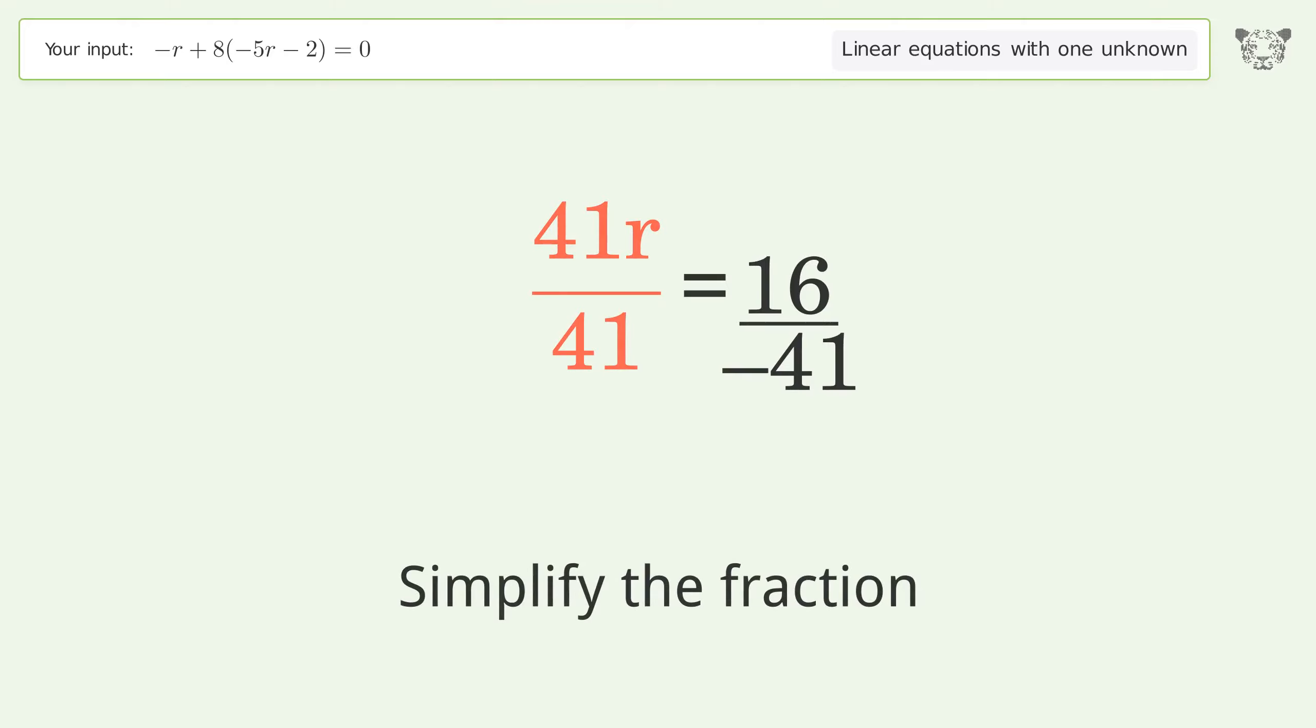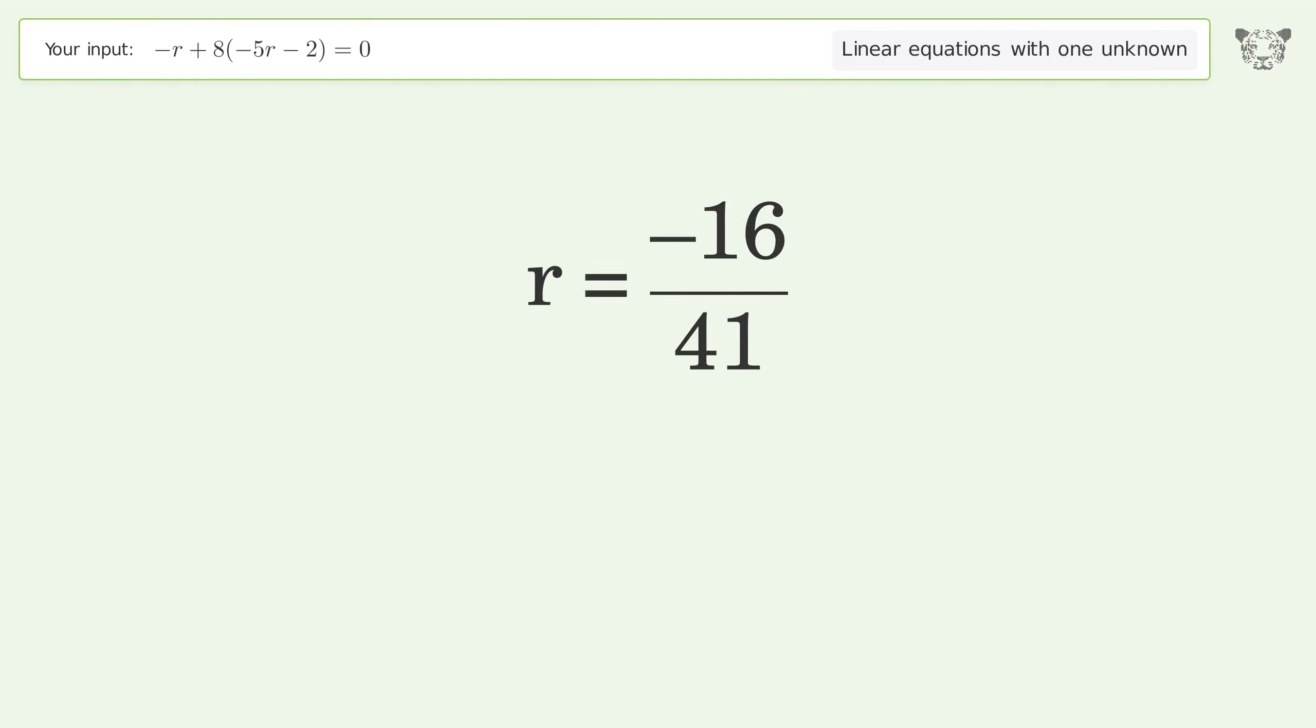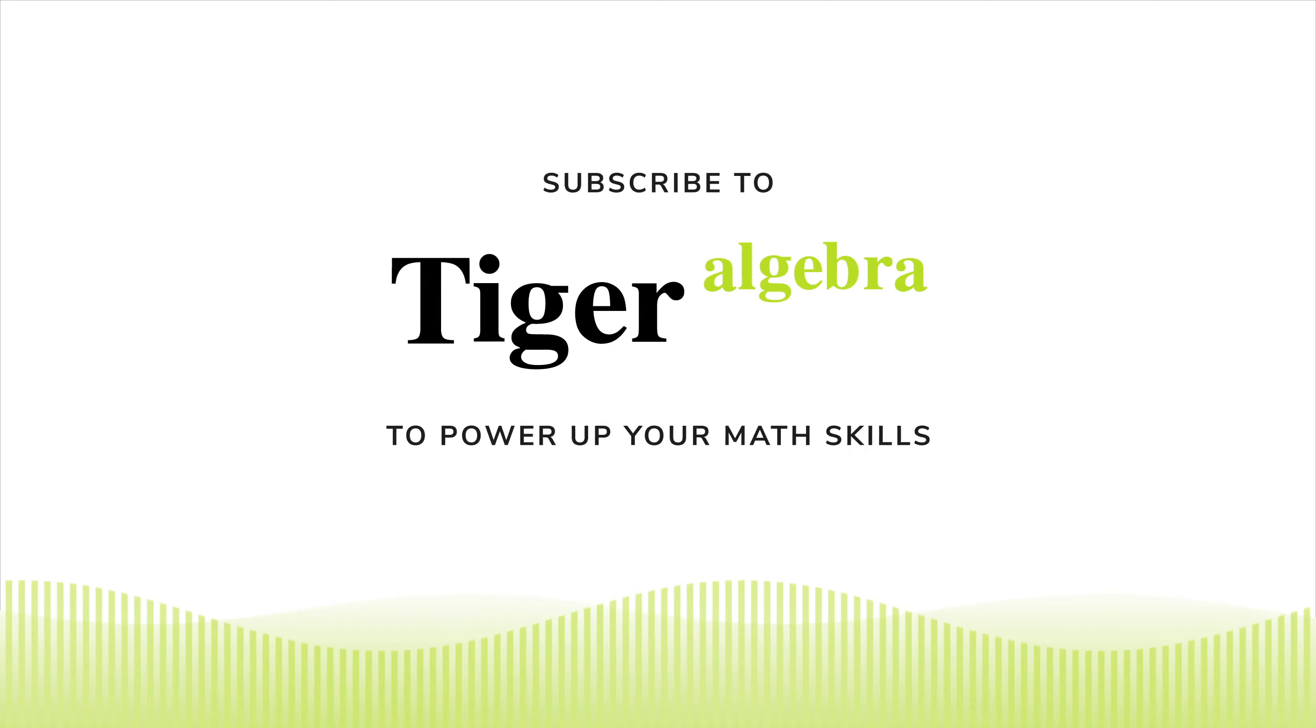Simplify the fraction. Move the negative sign from the denominator to the numerator. And so the final result is r equals negative 16 over 41.